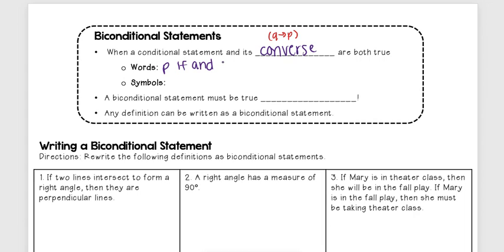In words, I would say P if and only if Q—my hypothesis if and only if my conclusion. In symbols, we have an arrow facing both directions. We can only have a biconditional statement if it is true both ways—if I go from the hypothesis to the conclusion it's true, and if I go backwards it's true.